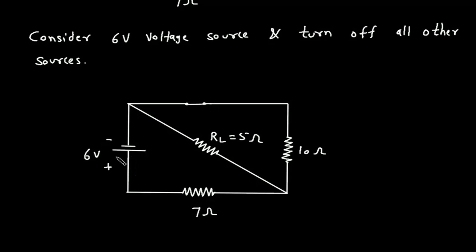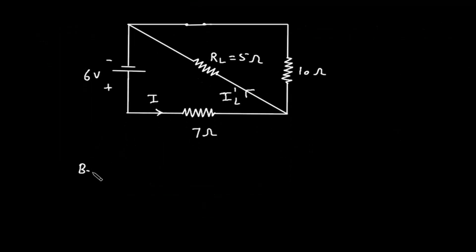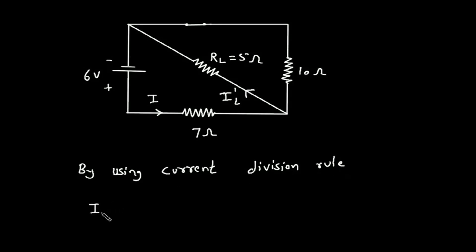According to the polarity of this voltage source, the current will flow from positive terminal to negative terminal. Let's say this is total current I, and this is IL prime. Now we have to find IL prime by using the current division rule. IL prime is equal to total current I, multiplied by the parallel branch resistance, which is 10, divided by 10 plus 5.